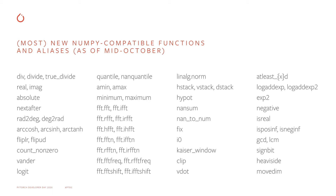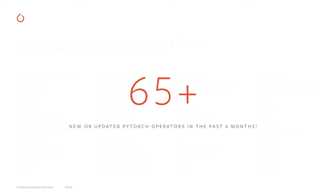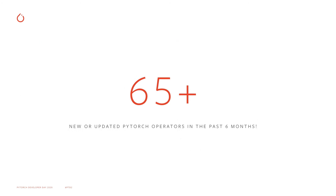We also updated some operators, like division, for example, which in PyTorch is now compatible with division in NumPy and Python 3, always performing a true division instead of sometimes performing an integer division. In total, we modified over 65 operators in PyTorch 1.7.